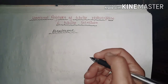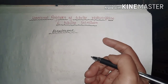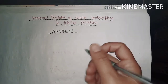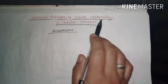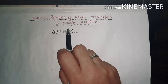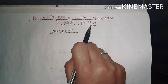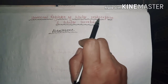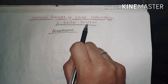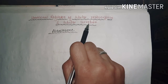Hey guys, welcome back. Today's topic of discussion is hormonal regulation of tubular reabsorption and tubular secretion. In this video we are going to discuss how hormones regulate the reabsorption and secretion of various electrolytes in the renal tubule.